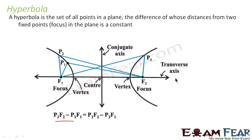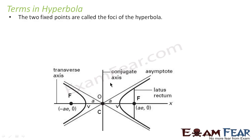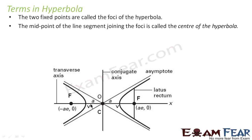The hyperbola has a transverse axis, and the line perpendicular to the transverse axis is called the conjugate axis. The points where the hyperbola meets the transverse axis are called vertices, and the fixed points are called foci. The midpoint of the line segment joining the two foci is called the center.